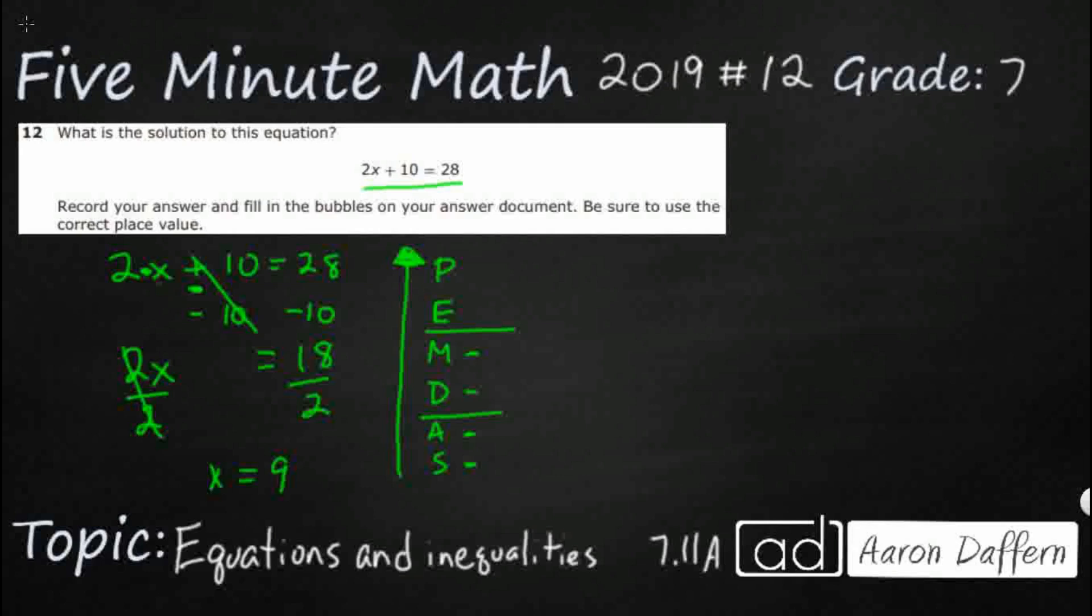Now, since there is no F, G, H, or J, it wouldn't hurt to go ahead and plug this back in. 2x plus 10 equals 28. Let's just make sure we did this right before we bubble it in. It's the nice thing about multiple choice. If your answer is not there, you know you probably did something wrong.